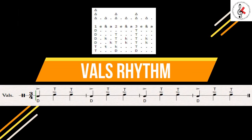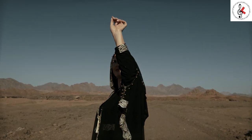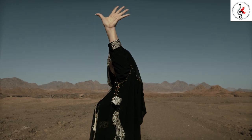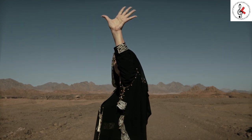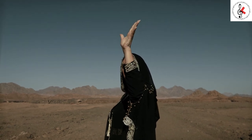The Vals Rhythm, also known as the Waltz Rhythm, is a popular and widely recognized rhythm in various musical traditions worldwide, including the Middle East. It is a 3/4 time signature that gives a graceful, flowing, and dance-like feel to the music.